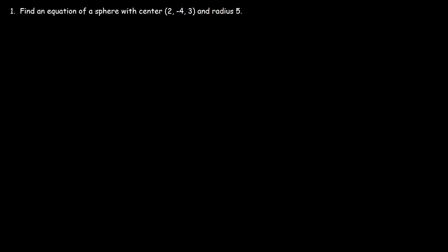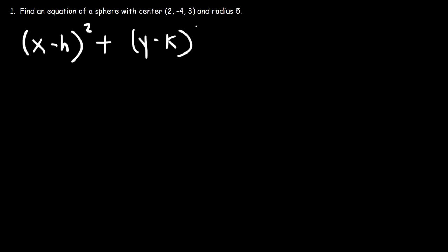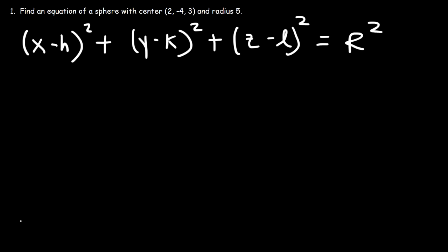Find an equation of a sphere with center 2, negative 4, 3, and radius 5. There's a formula that you need to know: x minus h squared plus y minus k squared — this looks like a circle — but once you add z minus l squared, now we have the standard equation for a sphere, with center h, k, l, and radius r.